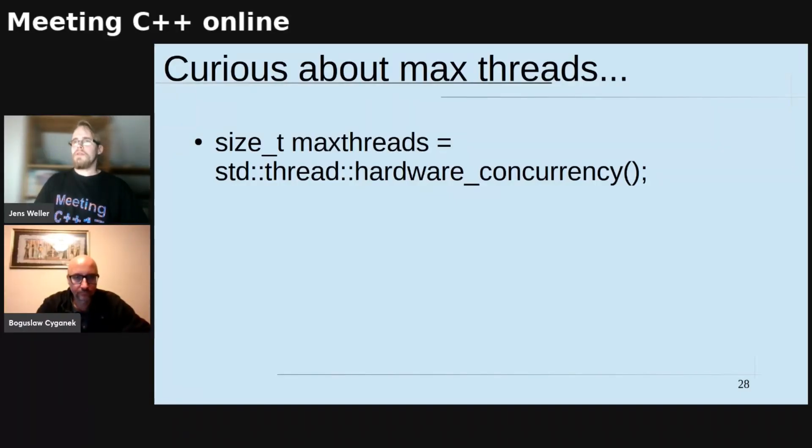And I was curious about how many threads I want to use, and then hardware concurrency is always nice to use. Also that way you learn that you can have, this is the number that on Compiler Explorer at the moment is two, and threads work at Compiler Explorer, but not always that great.